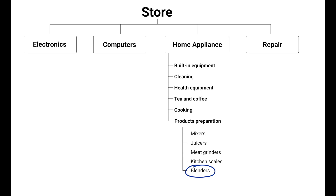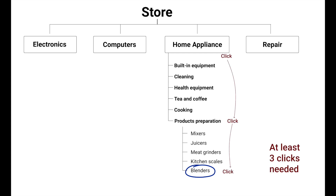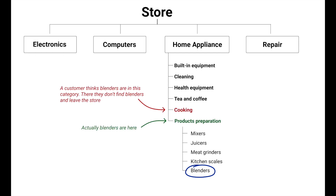Often people come to your store with a specific request. For example, they want a blender. You need them to get to the subcategory with blenders as soon as possible. The quicker the way is, the smaller the chance they will leave the store without placing an order. The problem is that a person has to get through lots of other subcategories on the way, and it's easy to get lost. For example, a user may think that blenders are in the food preparation category while they're actually in the cooking category. The user won't find blenders there and will go to another store.